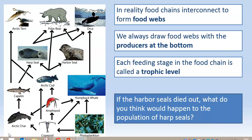The last thing you need to know about food chains and food webs is what happens if one of the organisms dies out. For instance, let's look at the harbour seal. If the harbour seal died out, what do you think would happen to the population of the harp seals? Pause the video for a minute and have a think. Will their population increase or decrease, and why? The answer will be coming up shortly.